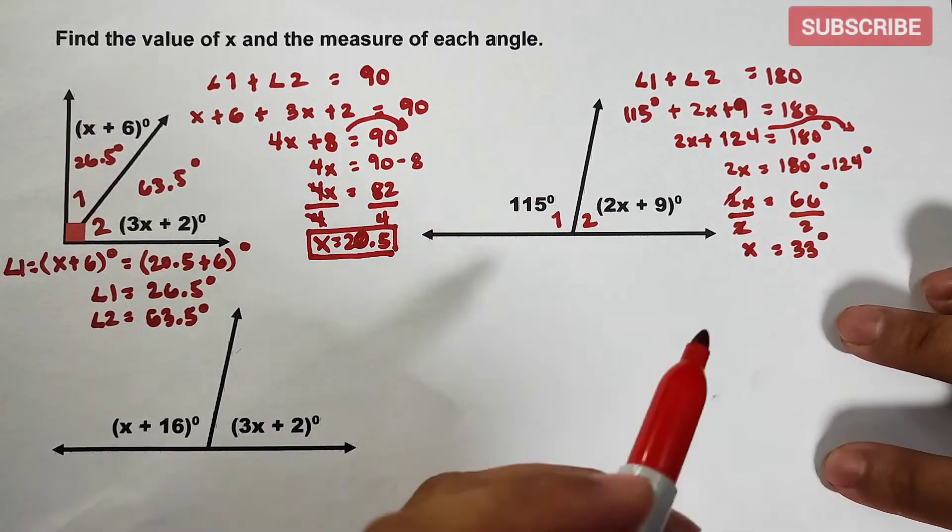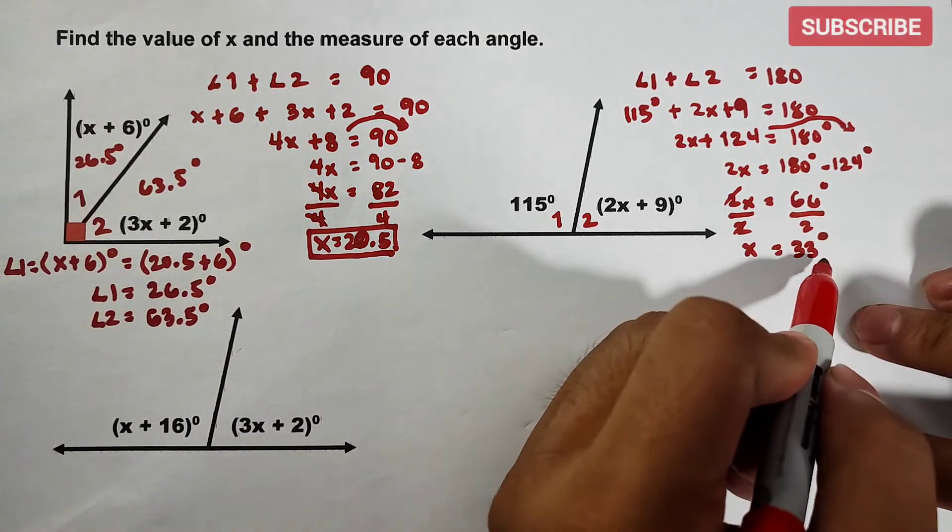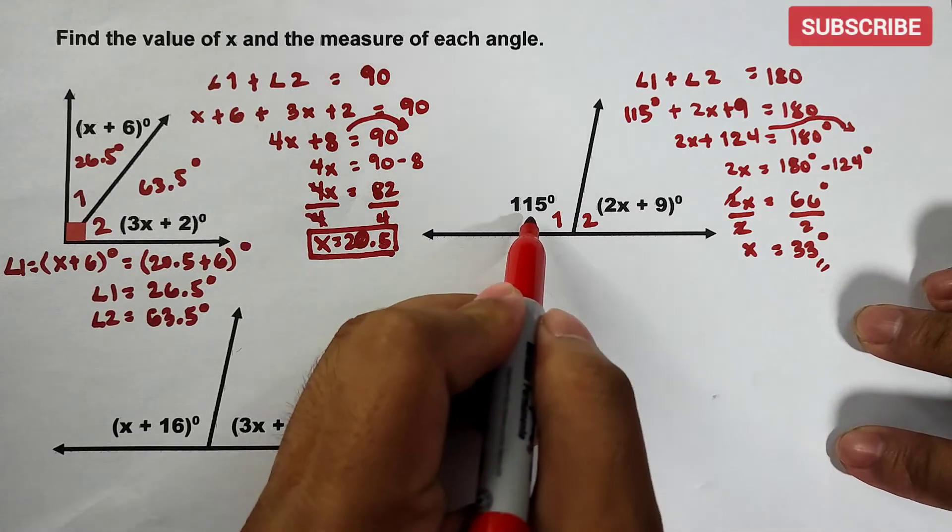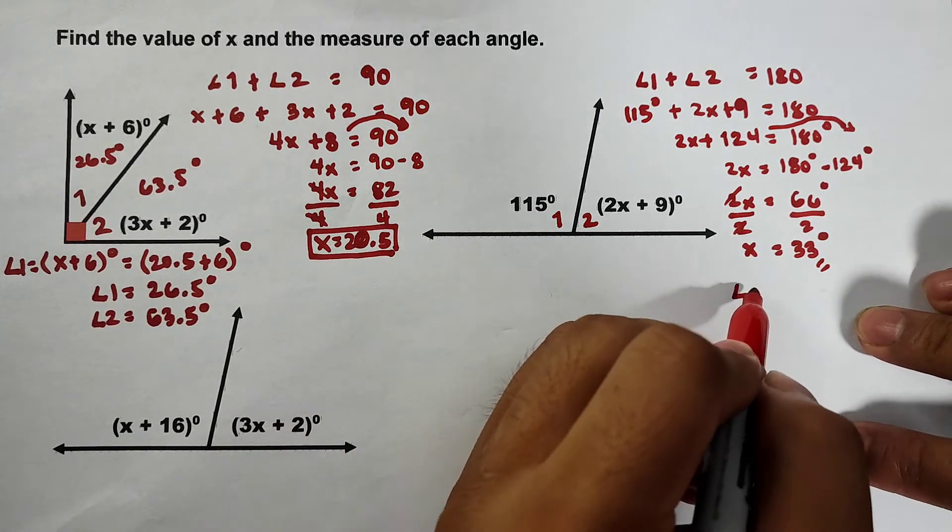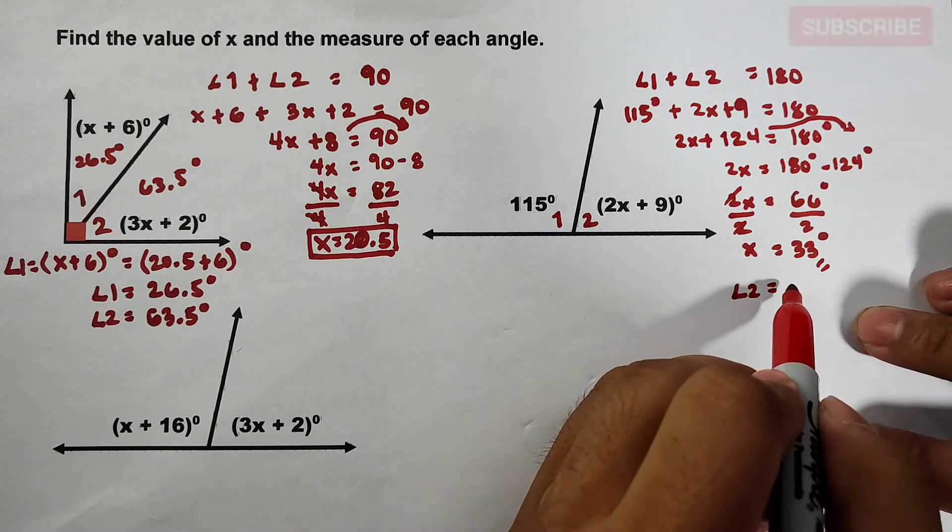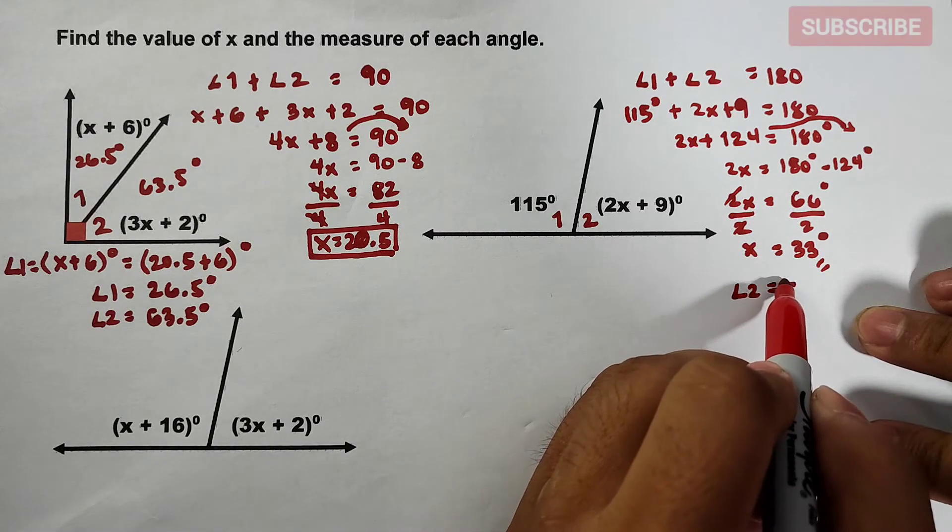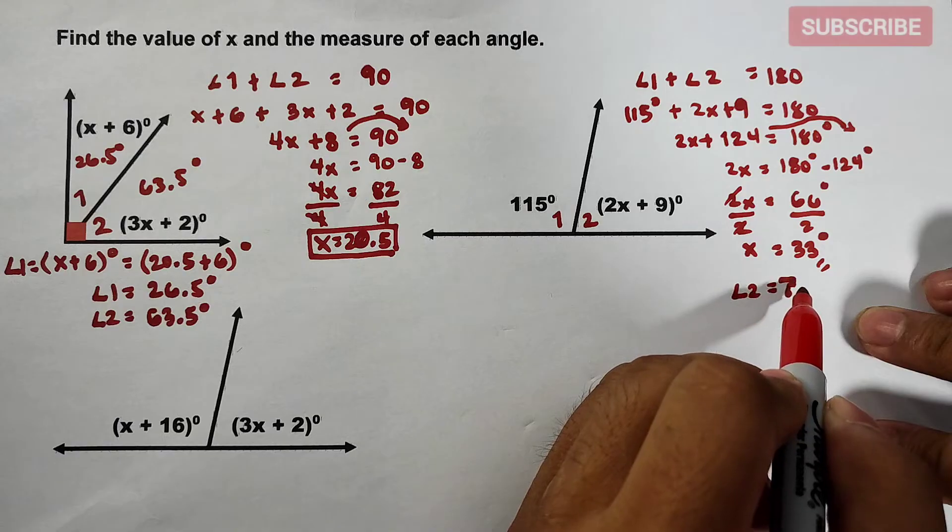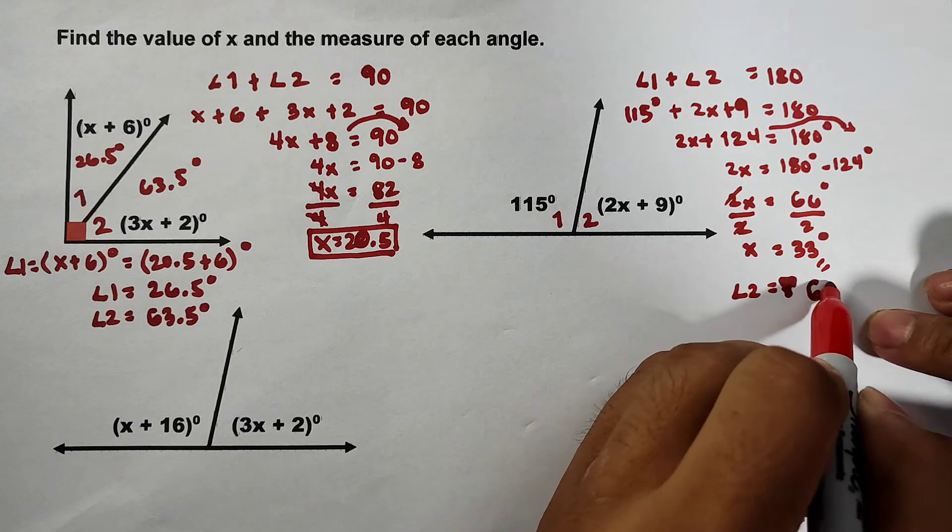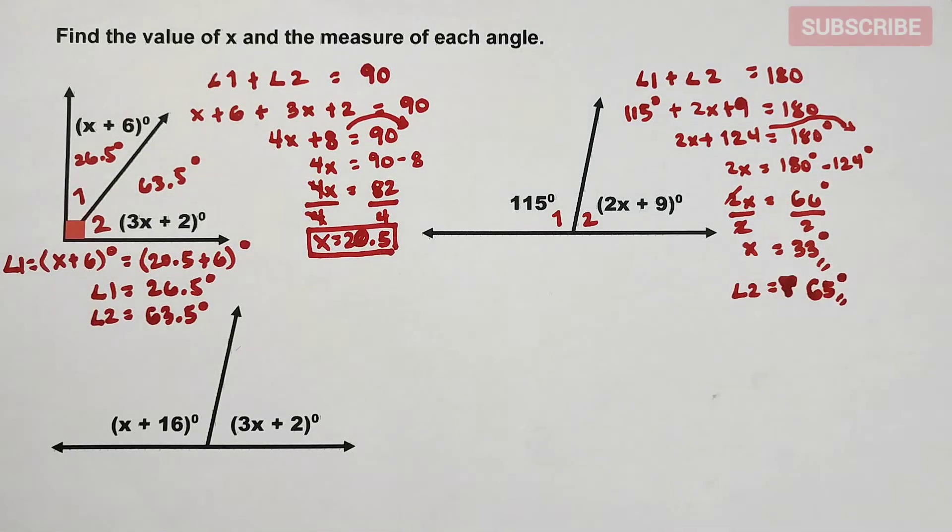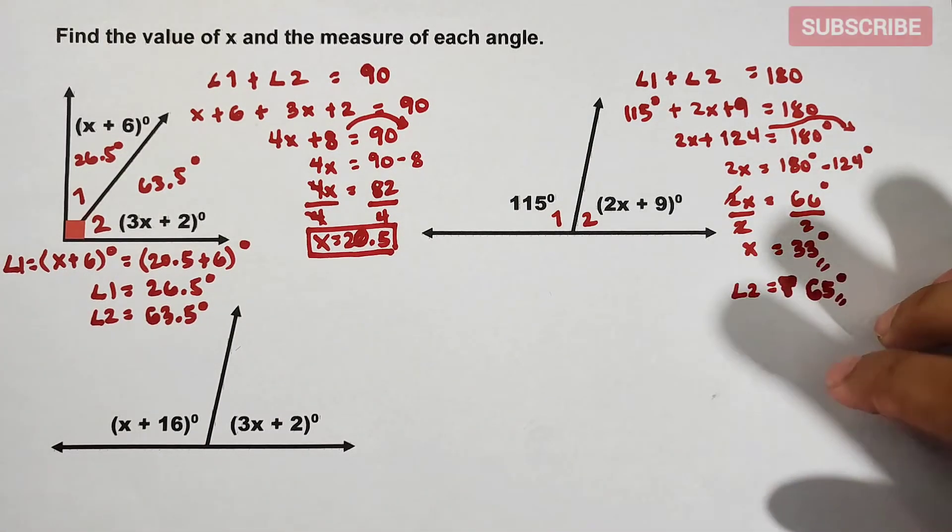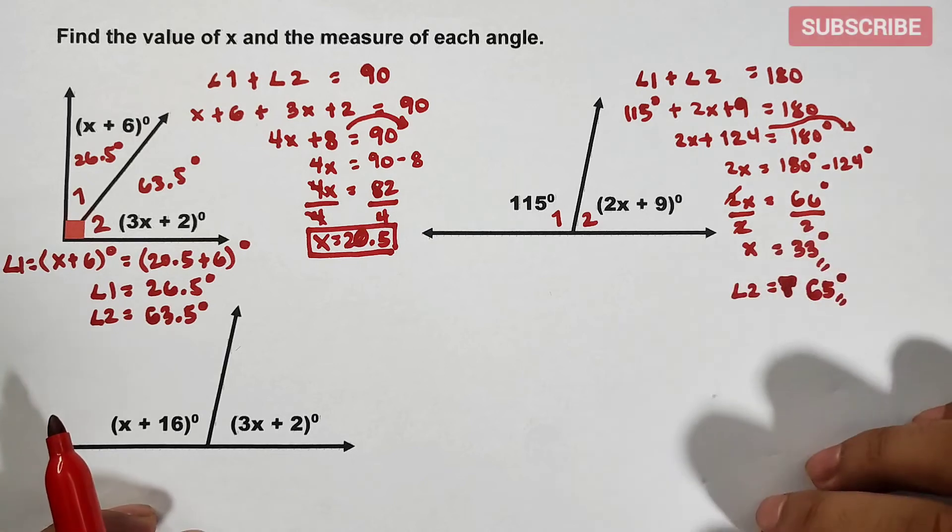Actually, x na lang kailangan hanapin dito. Because if your angle 1 measures 115, automatically your angle 2 is how many? That is 65 degrees. That is the answer for that. I hope na nakuha nyo yung concept na ito. Now let's move on with the next example.